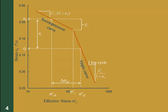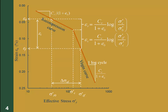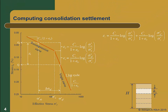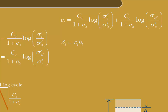To simplify our computations, it's helpful to divide this strain into that portion coming from the recompression curve, epsilon r, and that portion coming from the virgin curve, epsilon v. Both curves are linear in the semi-log space we use for the consolidation curve, so we can compute epsilon r as C sub R over 1 plus e0 times the log of sigma prime zf over sigma prime c. Similarly, we can compute epsilon v as C sub C over 1 plus e0 times the log of sigma prime zf over sigma prime c. The total strain in the ith sub-layer is simply the sum of epsilon r and epsilon v. The consolidation settlement of this sub-layer, delta sub i, is simply epsilon i times the original height of the sub-layer, h sub i.